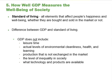GDP includes production exchanged in the market, but it does not cover production that is not exchanged in the market. GDP has nothing to say about the level of inequality in society. GDP per capita is only an average — when GDP per capita rises by 5%, it could mean GDP for everyone has risen by 5%, or that GDP of some groups has risen by more while that of others has risen by less or even declined.